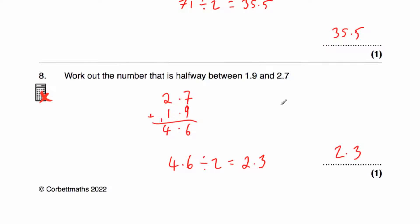We can check it: if we added 0.4 onto 1.9 we would get 2.3, and if we added another 0.4 we would get 2.7.